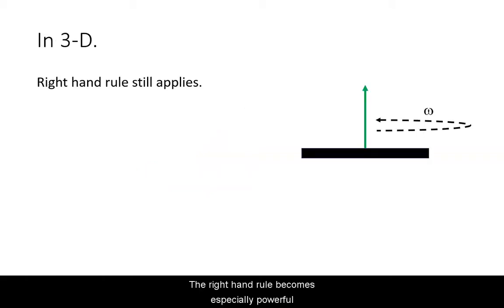The right hand rule becomes especially powerful once you have to represent angular quantities in more than just two directions. In that case, you still need to use your right thumb to represent the direction. But it is no longer restricted to just pointing outwards or inwards on the screen.